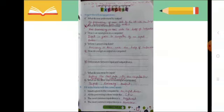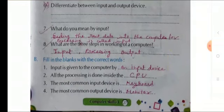Input is given to the computer by an input device. Second, all the processing is done inside the CPU. Number third, the most common input device is keyboard. Number four, the most common output device is monitor.